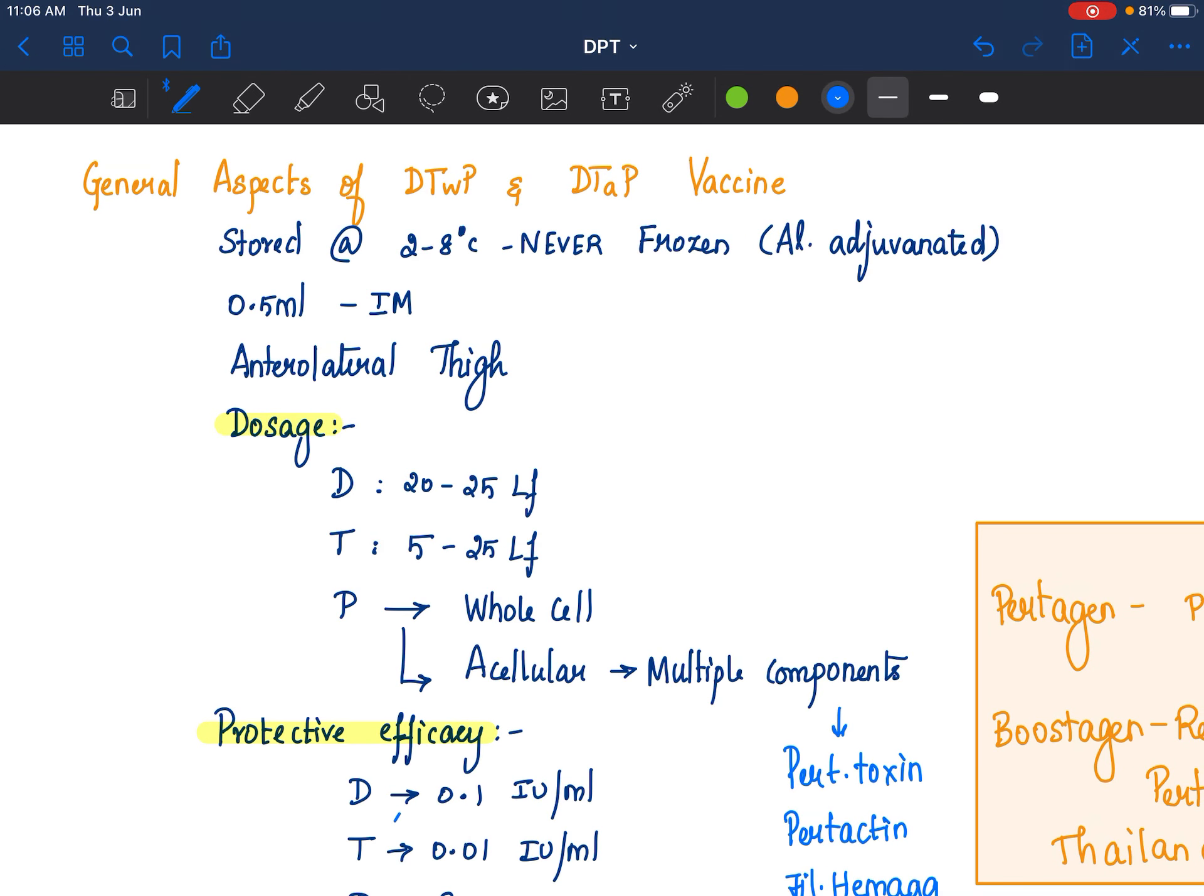DPT vaccine, first thing that you need to know is this is an aluminium adjuvenated vaccine. Any aluminium containing vaccine should never be frozen. If it is frozen, do not use it, discard it. It should be stored at 2 to 8 degrees Celsius. It is given as intramuscular injection 0.5 ml, preferably in the anterolateral thigh.